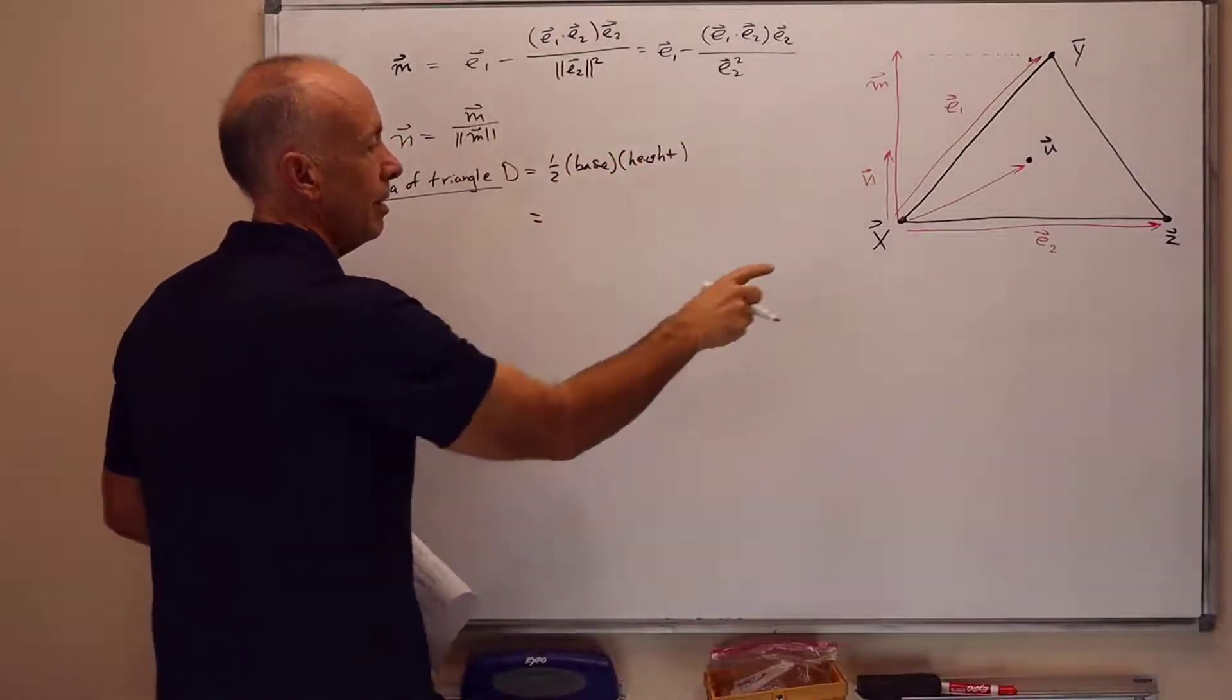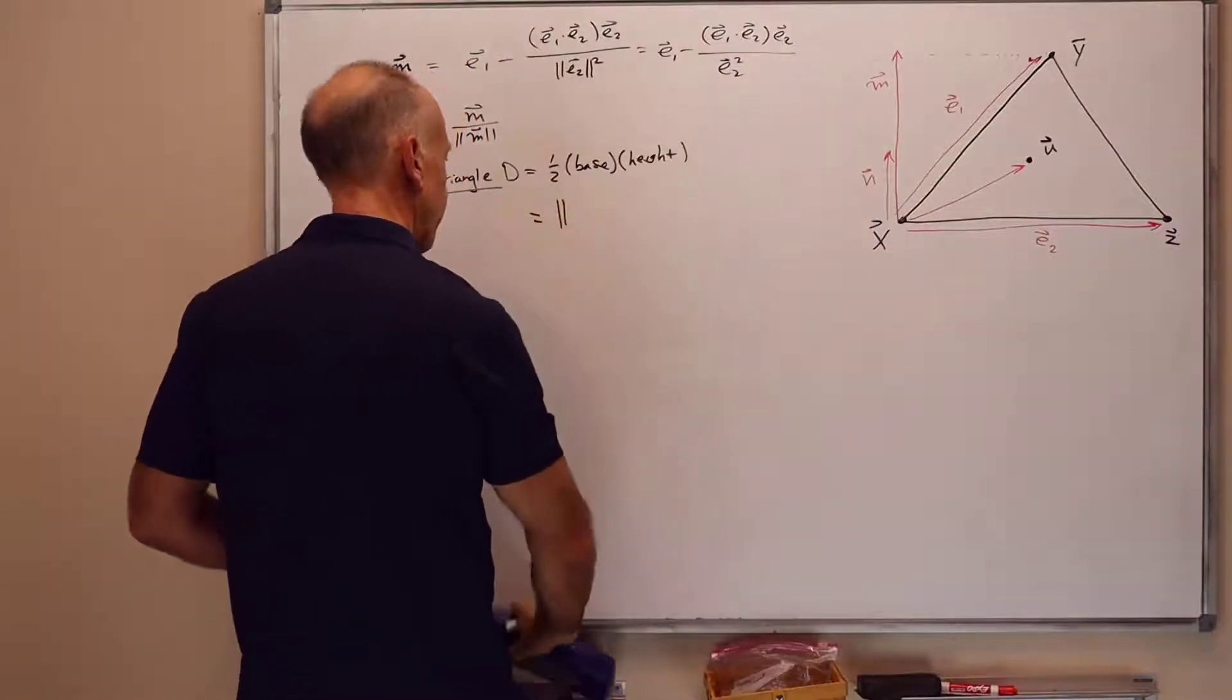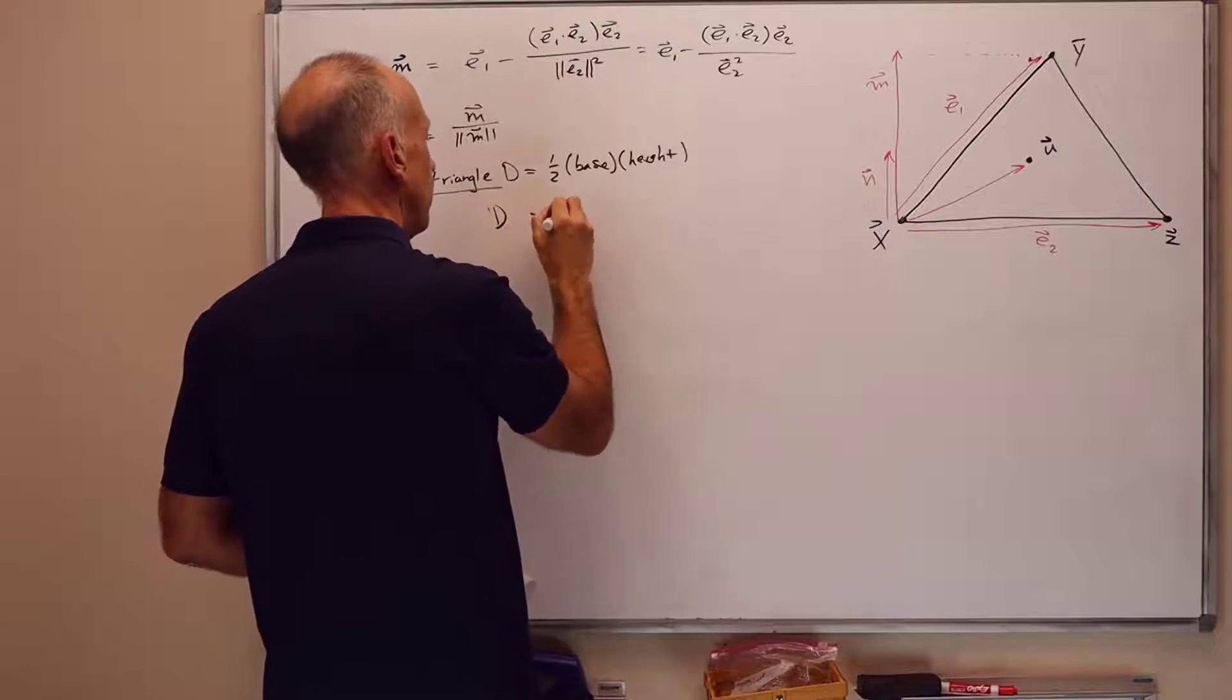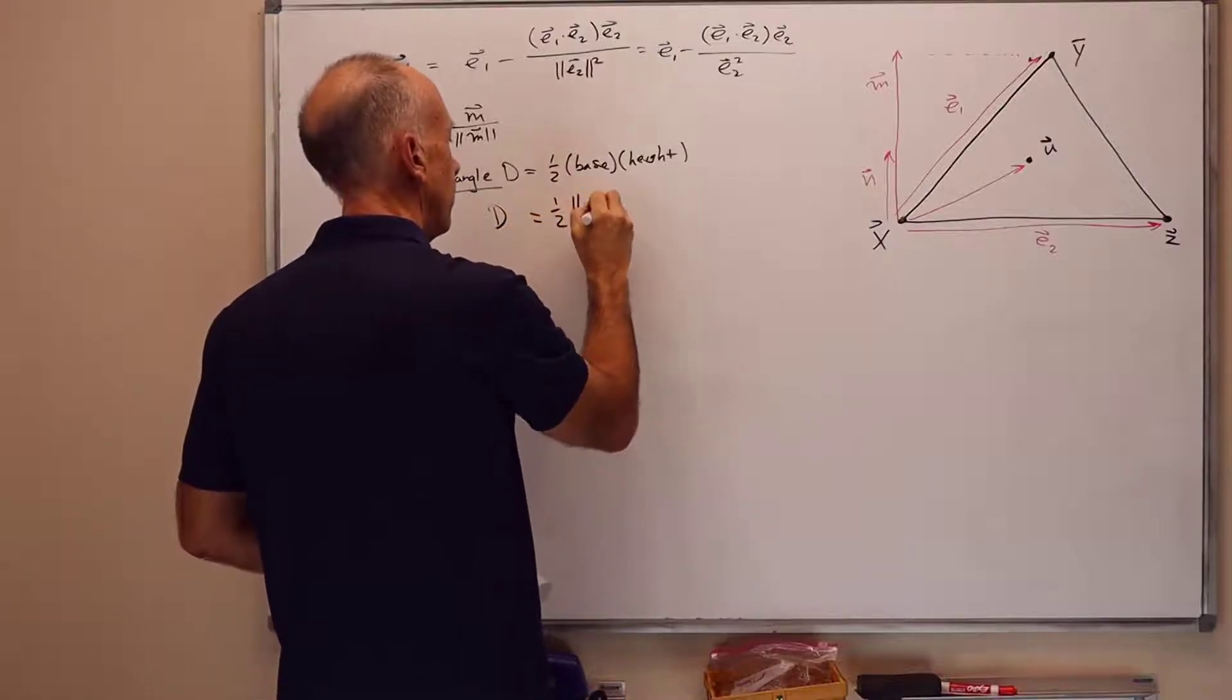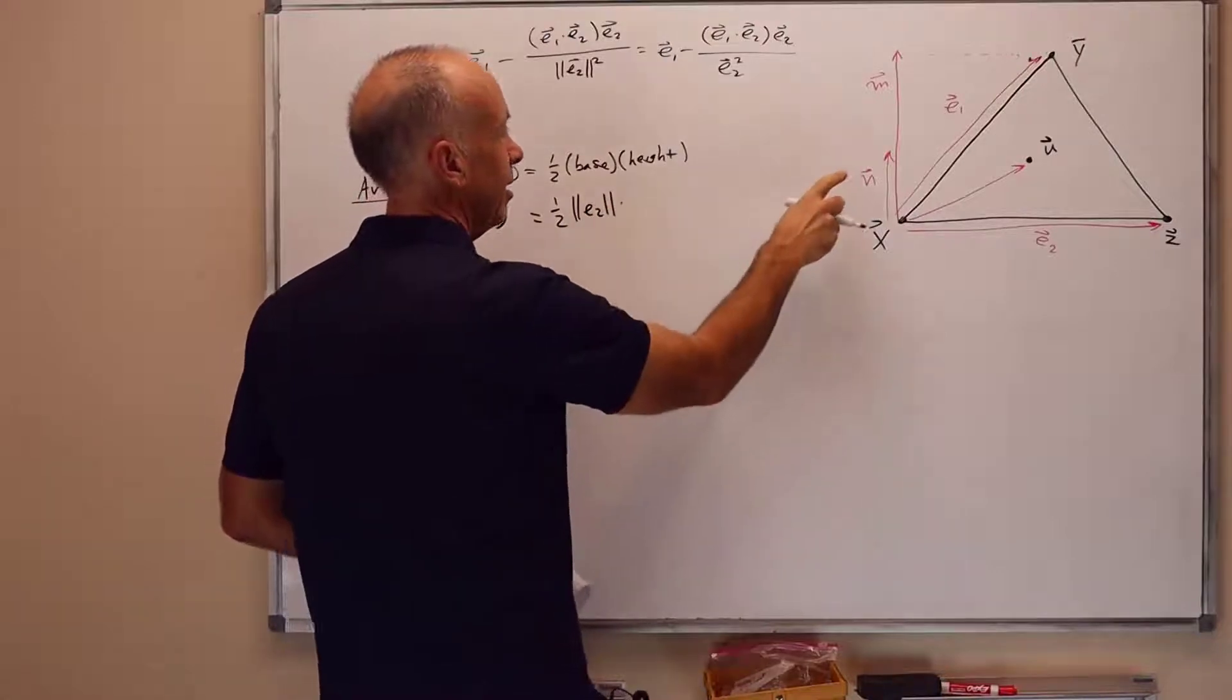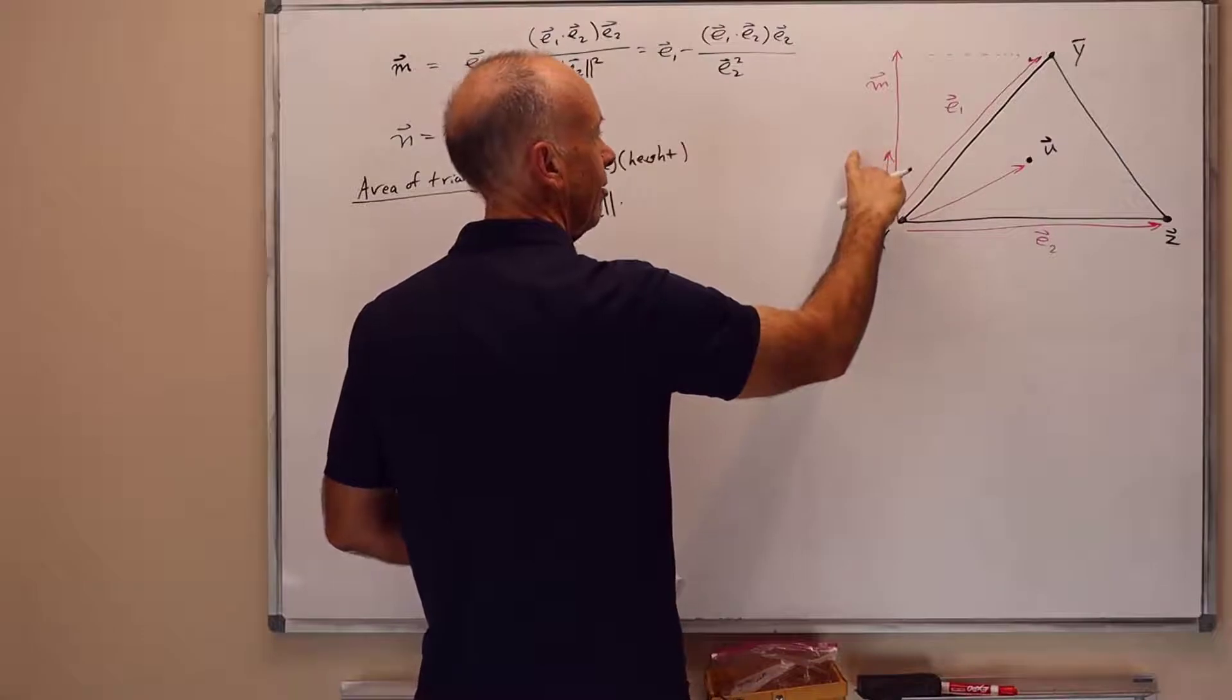And the base is going to be the magnitude of e2. So that's one-half times the magnitude of e2. That's one-half the base.